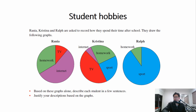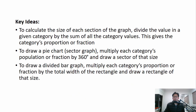Let's have a go at a quick activity to get a deeper understanding of what pie charts are. We have Rania, Chris, Christina, and Ralph — they were asked to record how they spend their time after school and they drew the following graphs. Rania is on the left, Christina in the middle, and Ralph on the right. In your exercise books, write a short description about each student in a few sentences and justify your description, meaning give a reason why. Pause the video and take a couple of minutes to write your descriptions.